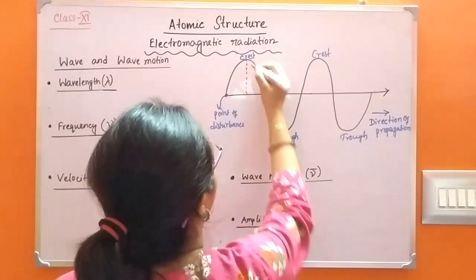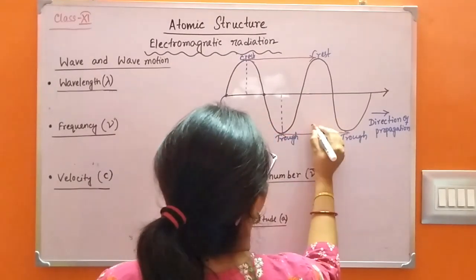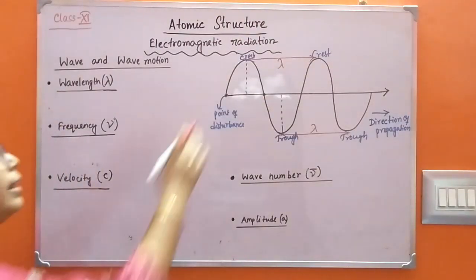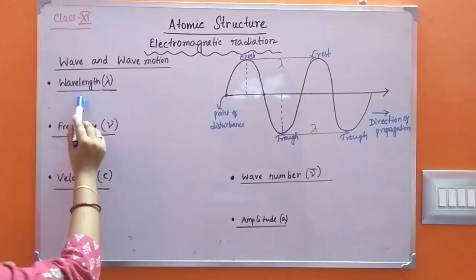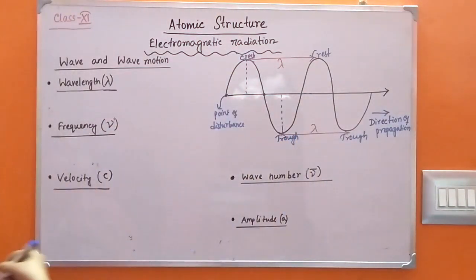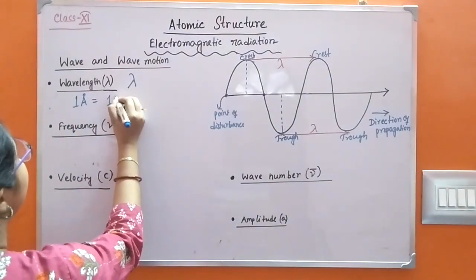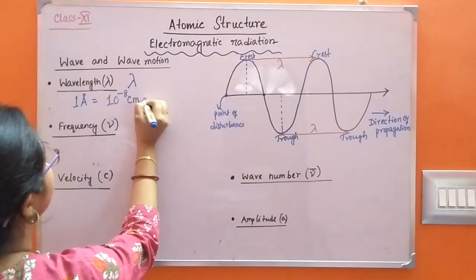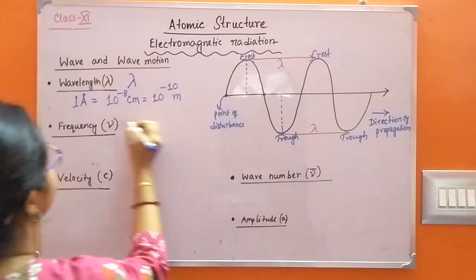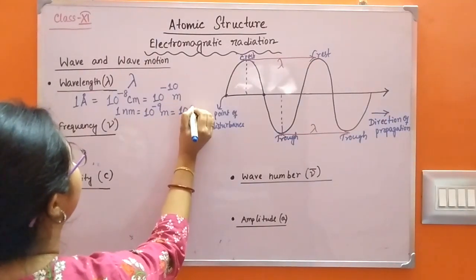The distance between two consecutive crests or two consecutive troughs is called wavelength, which is represented by lambda. It can be measured in angstrom or nanometer units; picometer and micrometer units are also used. One angstrom is equal to 10 to the power minus 8 centimeters, which equals 10 to the power minus 10 meters. One nanometer is equal to 10 to the power minus 9 meters, which equals 10 angstroms.